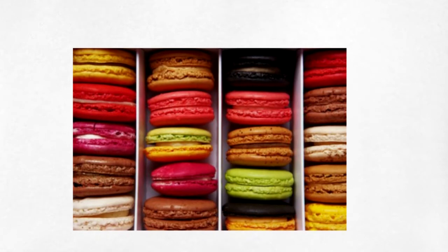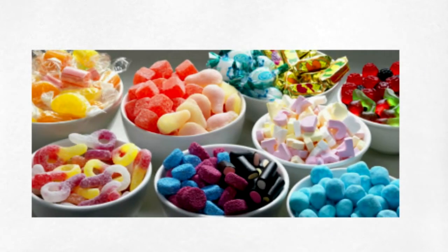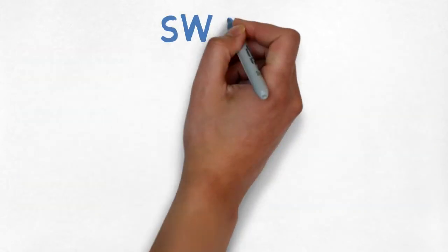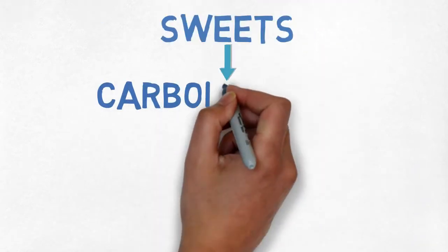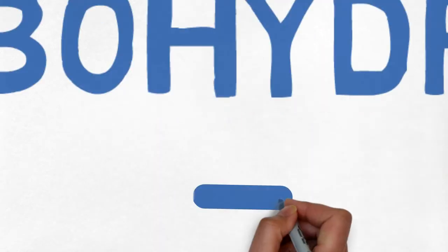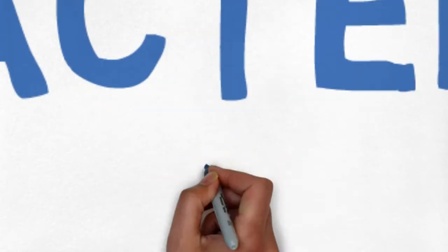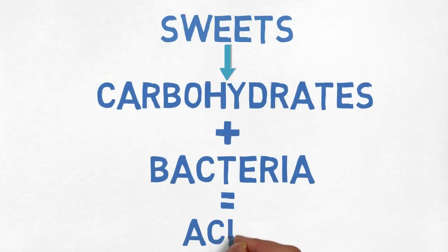Sweets are delicious and quite addictive. Who wouldn't want a candy or a piece of cake, right? But sweets contain high amounts of carbohydrates which interact with bacteria in our mouth to form acids. These acids cause enamel erosion.